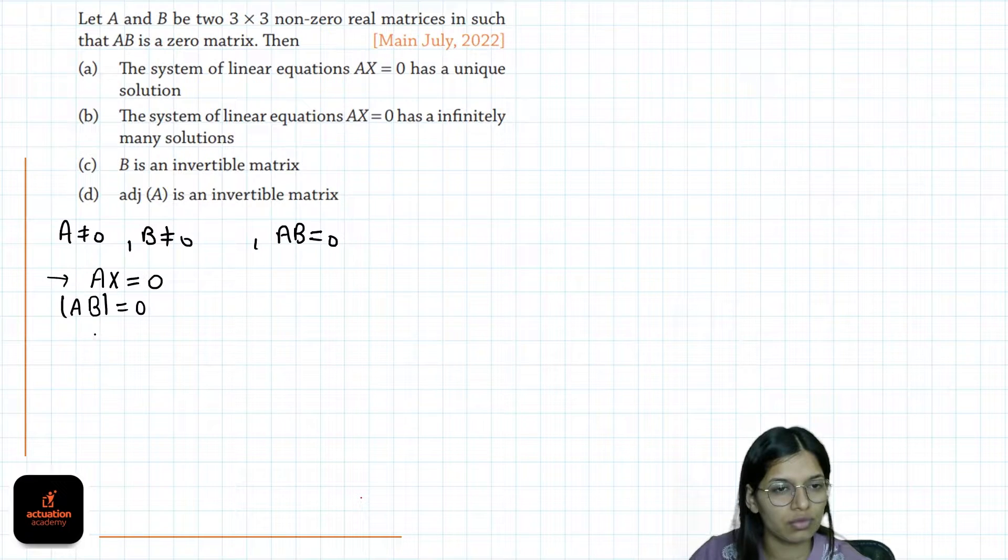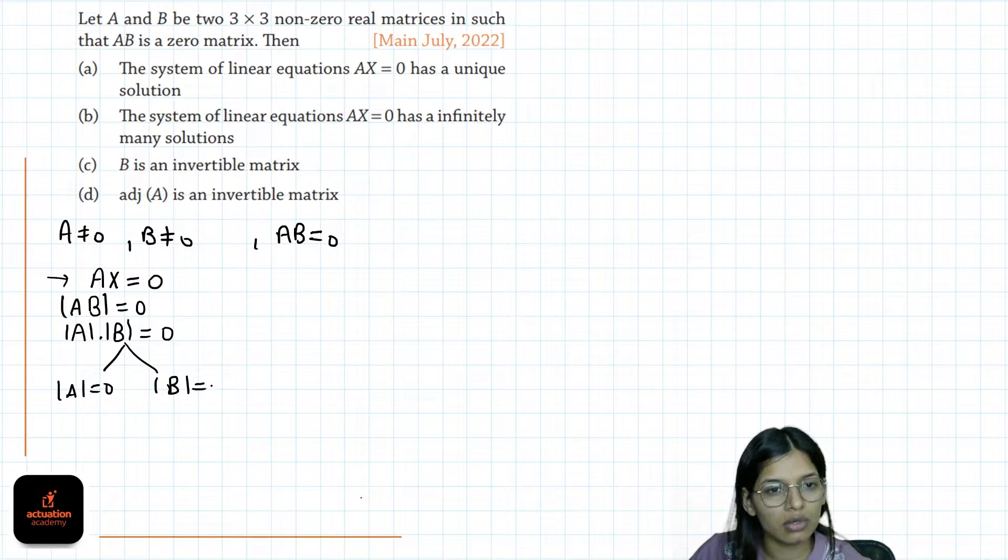Determinant of AB is 0 implies determinant of A times determinant of B is 0. This will imply either determinant of A is 0 or determinant of B is 0.